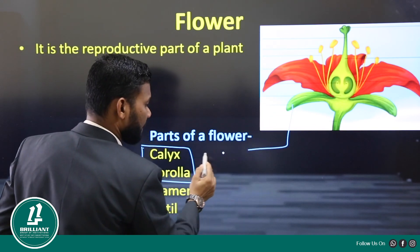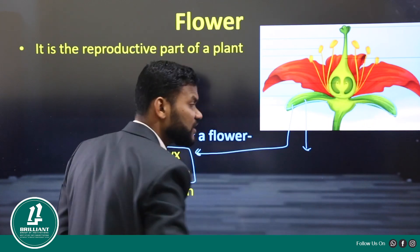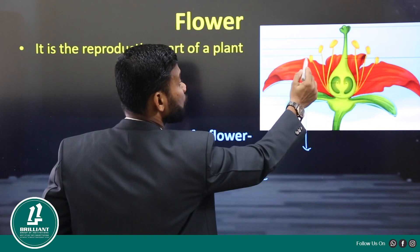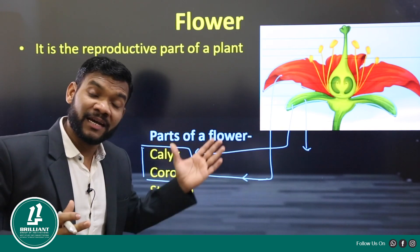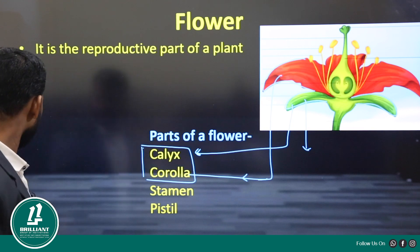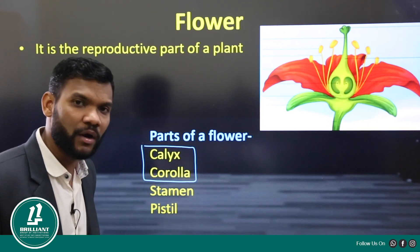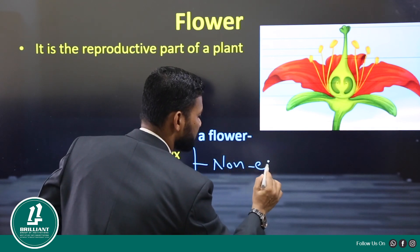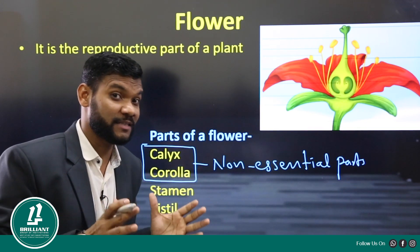The calyx is the green-colored part you can see here. Because it is green, it can do photosynthesis. Corolla is the most attractive part of the flower. These two parts — calyx and corolla — are not directly involved in reproduction. So we call them the non-essential parts of a flower.